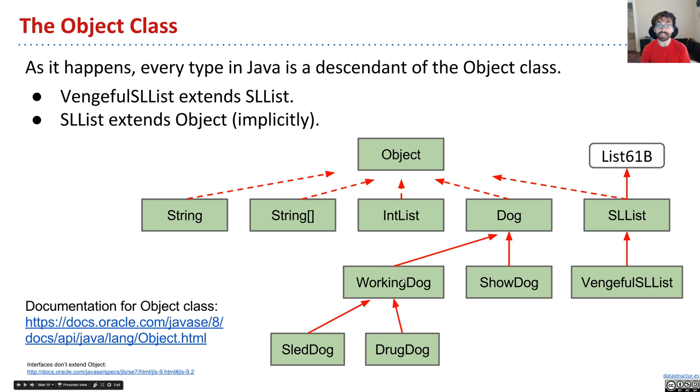Working dogs, well, a working dog is a dog. So we might say it extends the dog class. And then of course, working dog gets all the dog members. And sled dog does too, transitively, because it travels down the hierarchy all the way to the bottom.